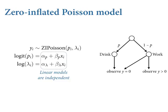Given your background knowledge of the system, there can be different predictors in these different processes — something completely different might determine whether they party compared to how fast they produce manuscripts when working. Why is the second link log instead of logistic? Because that's the Poisson rate, and we need to constrain it to be positive. Lambda needs to be positive, so the customary link is log. If you exponentiate that linear model, it's guaranteed to be positive. We're using the conventional links from both the binomial and Poisson models, but both processes are in the same model.